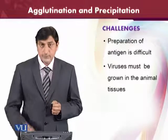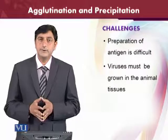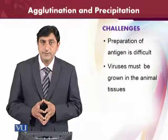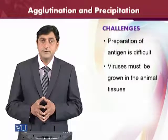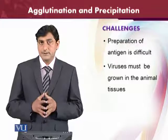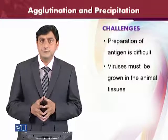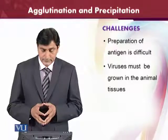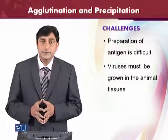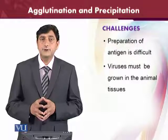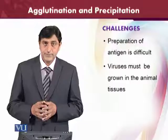However, it is accompanied with some challenges and difficulties, particularly the preparation of the antigen. Antigen preparation is very difficult for the agglutination and precipitation test because you need to use animal tissues for the cultivation of viruses, and viruses grown in animal tissues is not easy. Therefore it is combined with some difficulties for the agglutination and precipitation test.